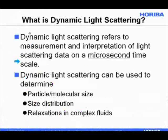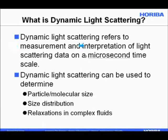Dynamic light scattering refers to the measurement and interpretation of light scattering data on a microsecond timescale. You imagine an experiment where you're measuring scattered light — you can look at the average signal on a longer timescale, or look at tiny fluctuations in the signal over a very short time. It's the latter case that we're interested in here.